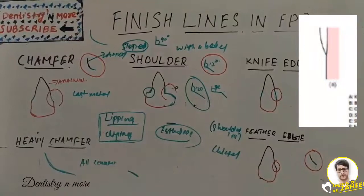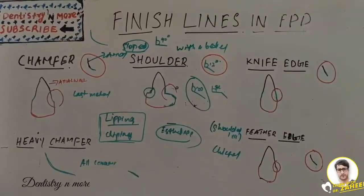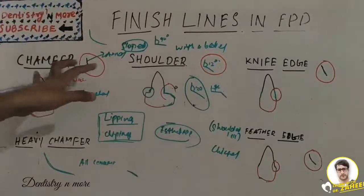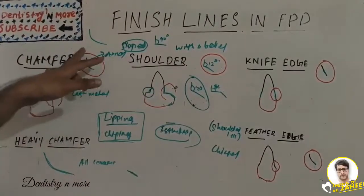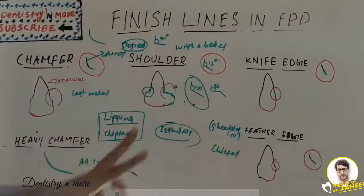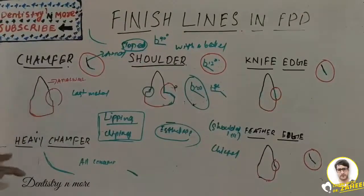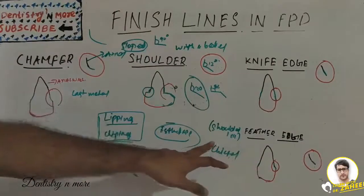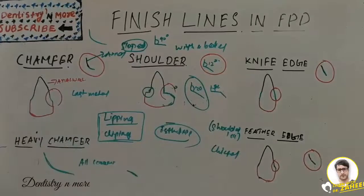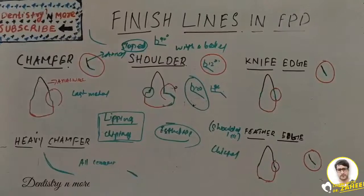To summarize, we covered various finish line designs: chamfer, heavy chamfer, shoulder, radial shoulder, sloped shoulder, shoulder with bevel, knife edge, feather edge, and chisel edge. All differ mainly in angulation of the axial wall to the gingival wall. That was all about finish lines in FPD. I'll come with a new topic in prosthodontics — thank you.